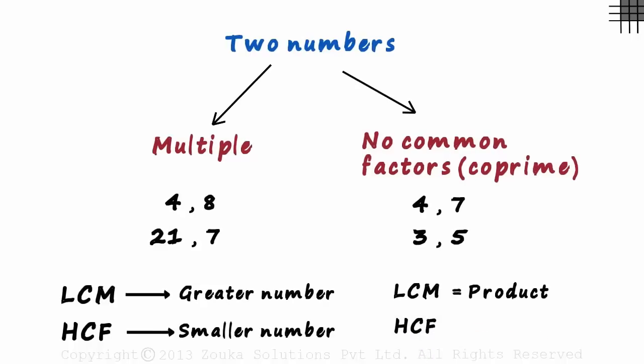It will always be 1. The HCF of 4 and 7 as well as the HCF of 3 and 5 equals 1. But remember, these techniques should be used only to verify your answers.